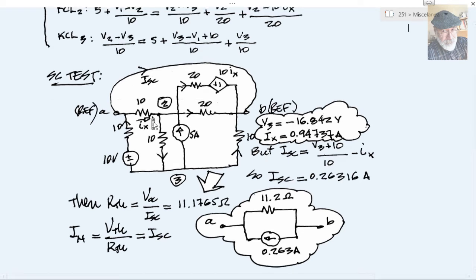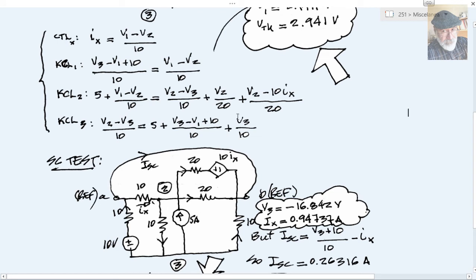The equations are going to be very much the same with a few changes. Ix remains to be the same. KCL1 is gone. We don't have KCL1 because node 1 now is part of the reference. And we know we don't write a KCL equation for the reference or any of its parts. And we are left with three equations.